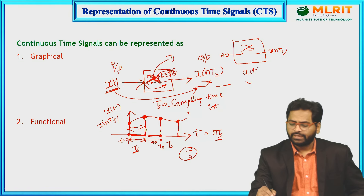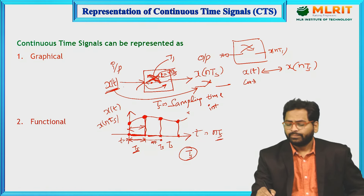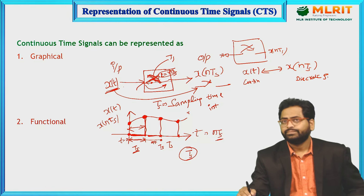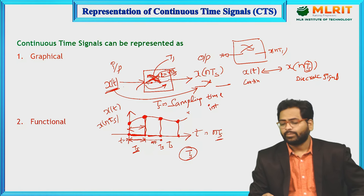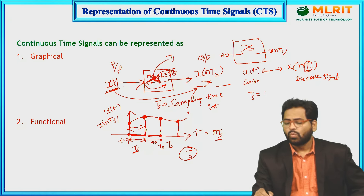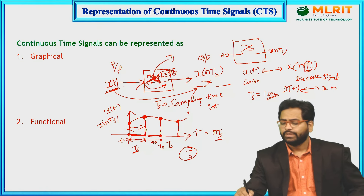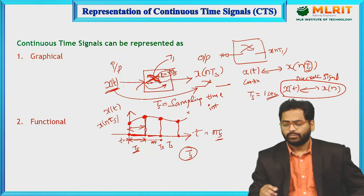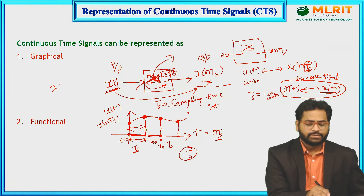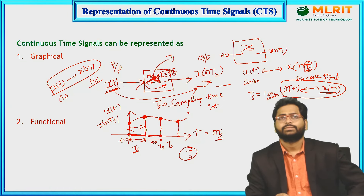x(t) becomes x(nTs). This x(t) is a continuous signal and x(nTs) is the discrete signal. If we take Ts = 1 second, then x(t) becomes simply x(n). This is a continuous signal and this is a discrete signal — these are the two kinds of signals.